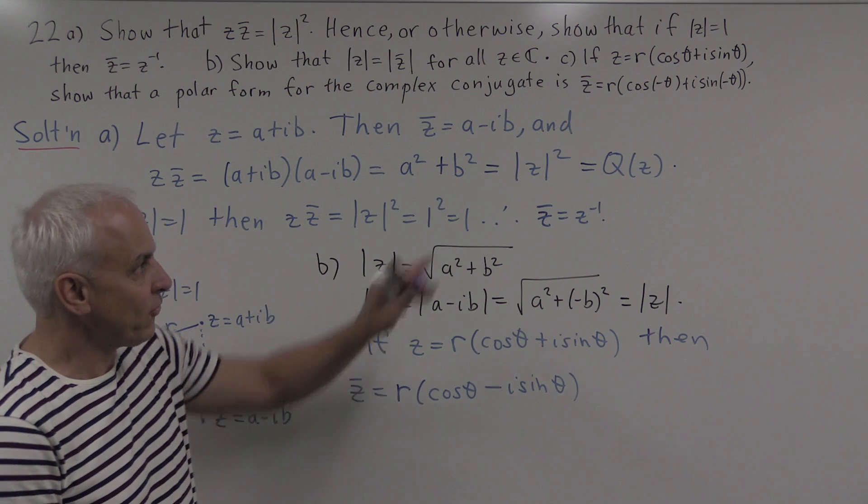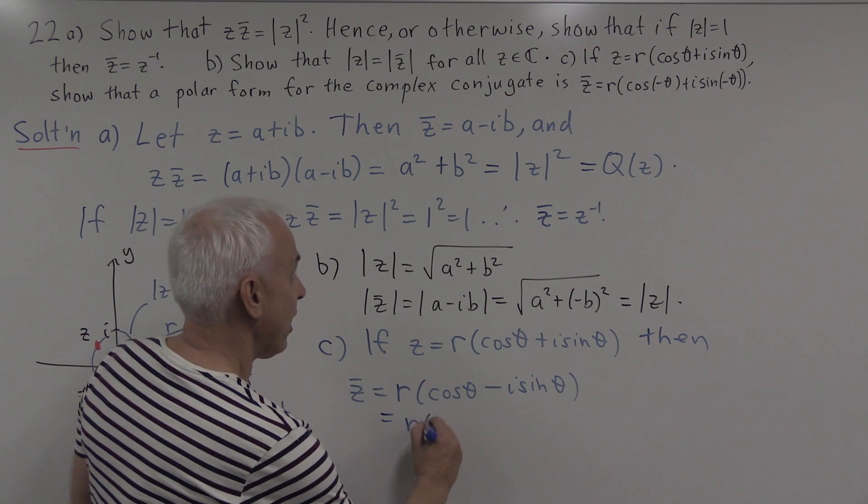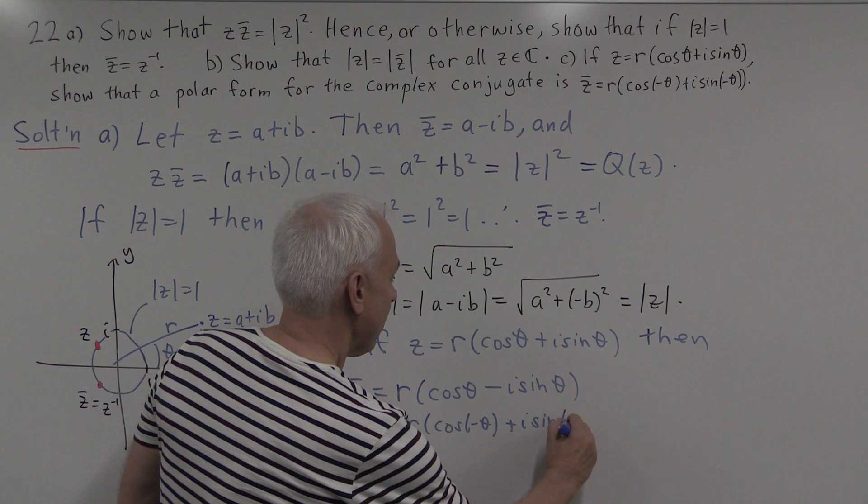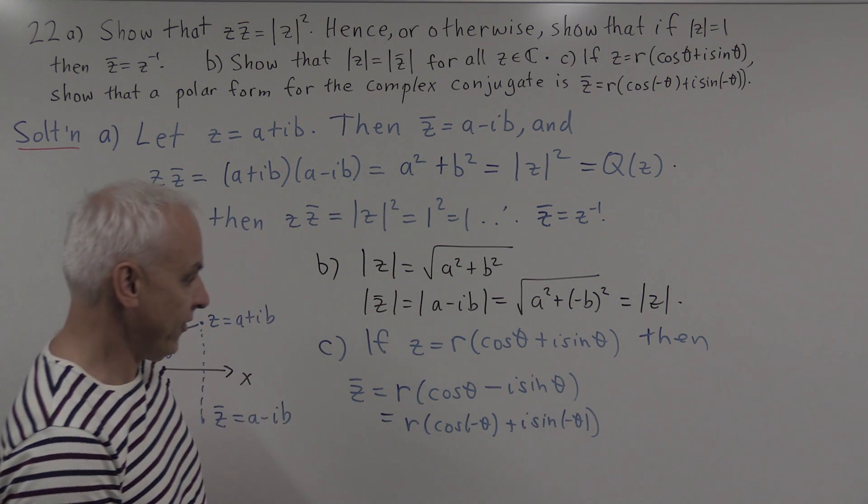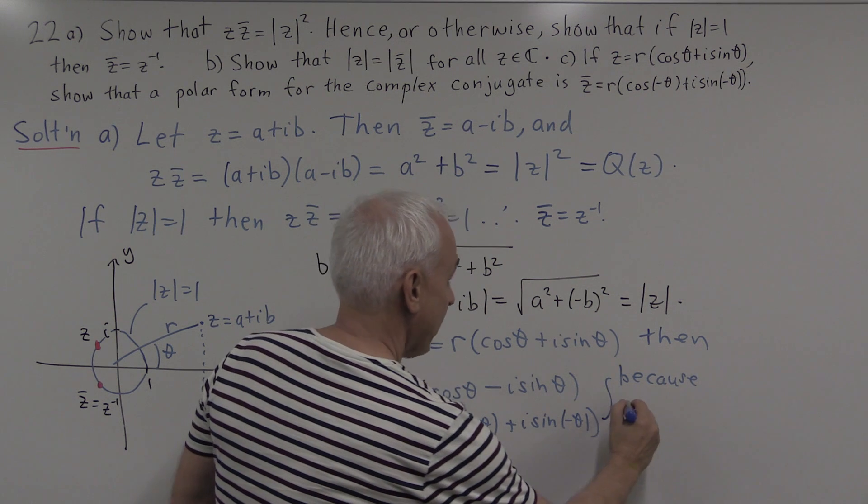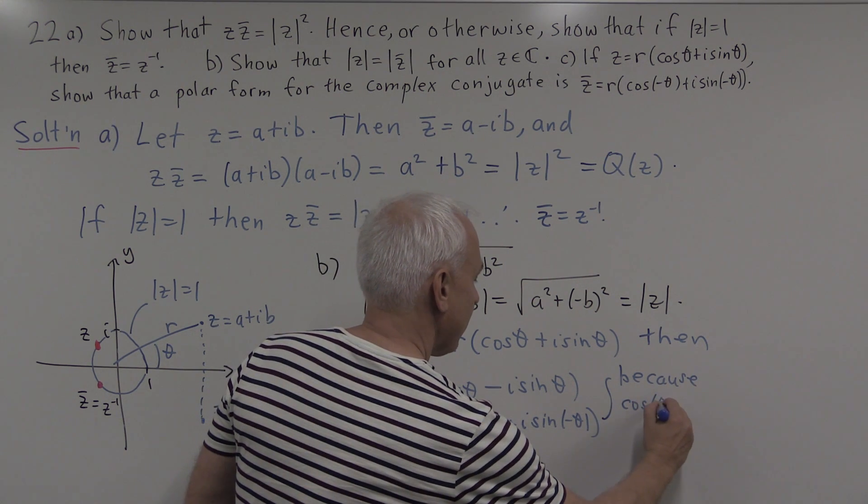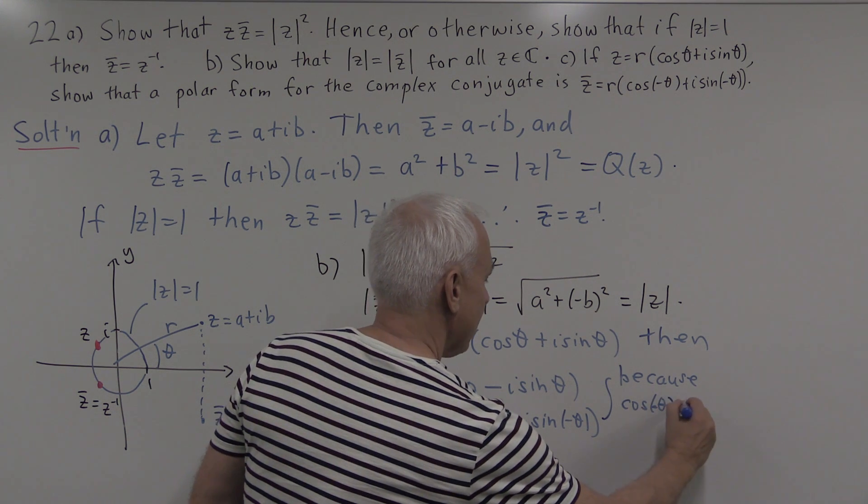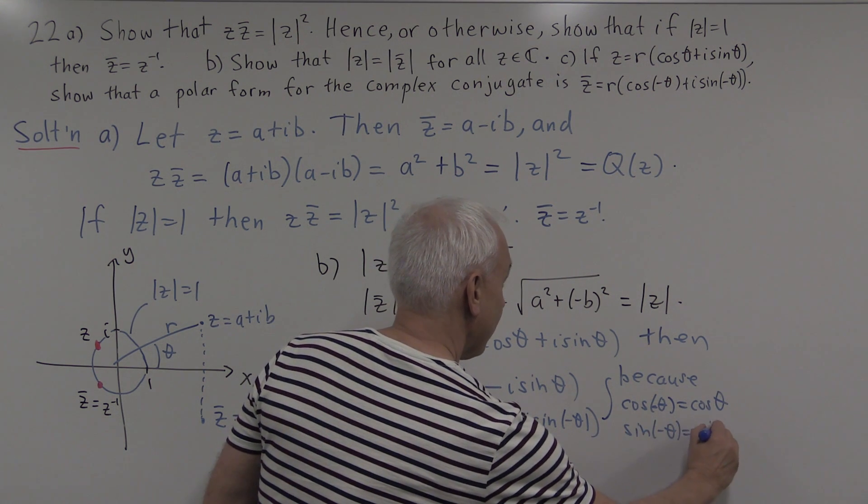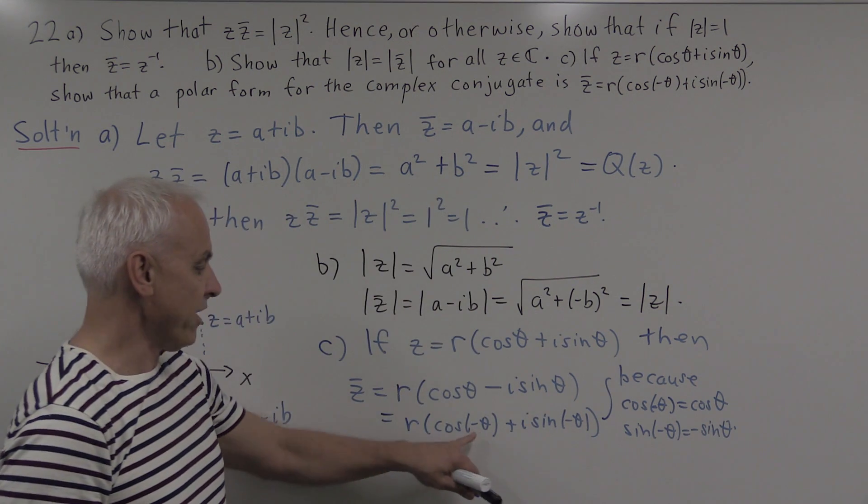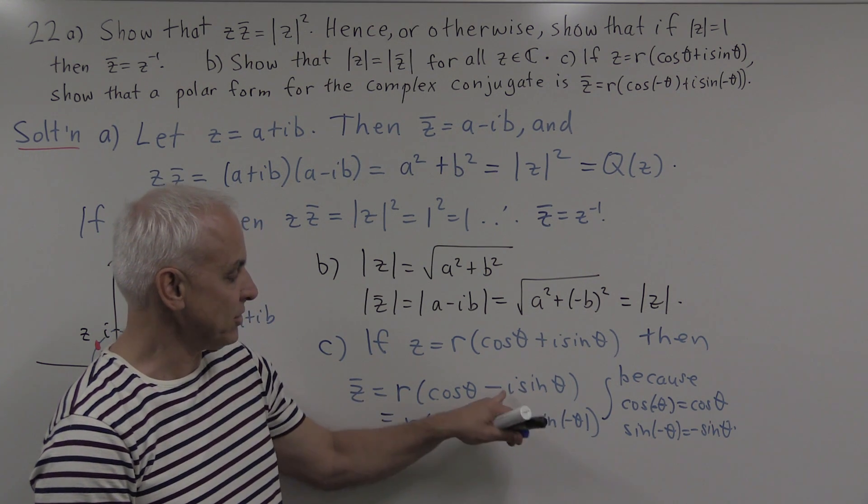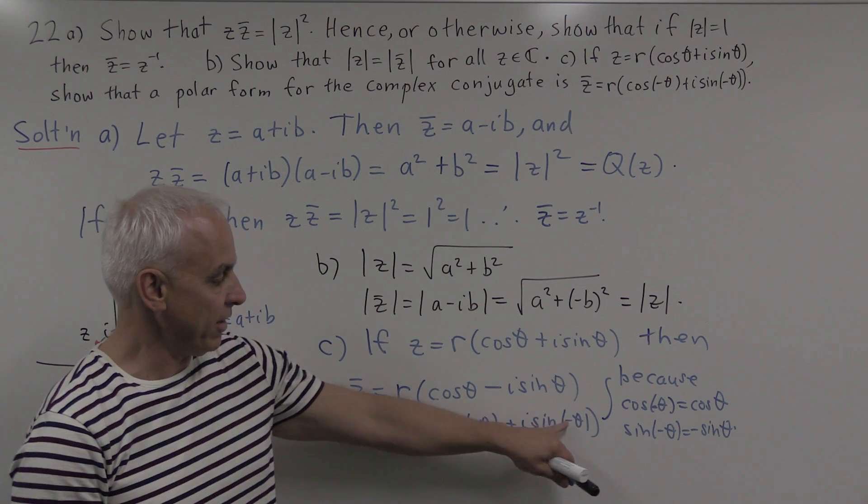And now we observe that we can rewrite it this way: we can write it as r times (cos(-θ) + i sin(-θ)), because we know that cos(-θ) equals cos(θ), and sin(-θ) is -sin(θ). So this cos(-θ) is really the same as cos(θ) there, and this sin(-θ) is the same as -sin(θ). That's allowing us to go from here to here. That minus sign changes the plus sign because of the minus sign in there.